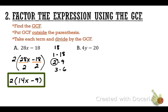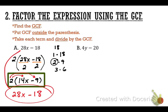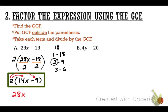You don't need to write this down, but I want to show you something. Remember distributive property? When there's a number outside the parentheses, multiply it by both terms. 2 times 14x is 28x, and 2 times negative 9 is negative 18 — which is our original problem. What I'm teaching you is basically reverse distributive property.